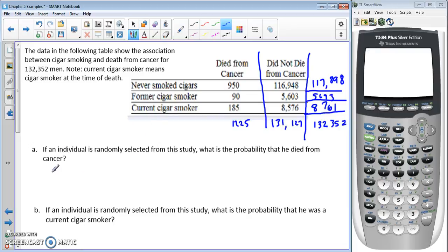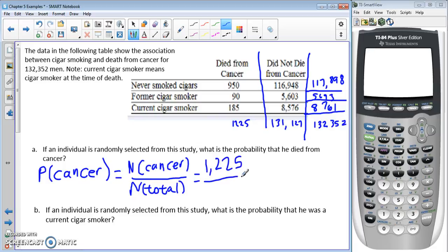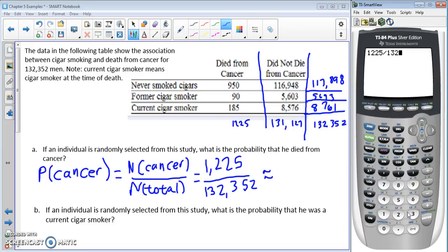Part A asks: if an individual is randomly selected from the study, what's the probability they died from cancer? The probability of cancer is the number of cancer cases over the total. Following that down, we get 1,225 over 132,352. Let's divide that in a calculator and get a decimal approximation. The directions don't specify what to do, so just make sure when you're doing these problems on your homework that you're paying close attention to the directions on how many places to round.